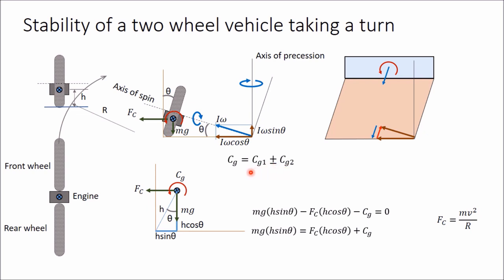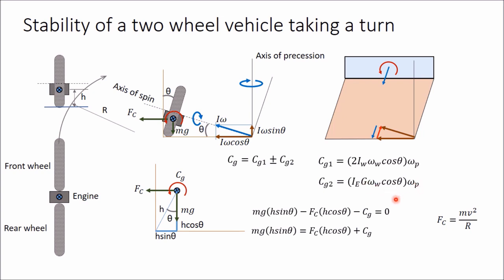Cg1 is calculated as: Cg1 = 2·Iw·ωw·cosθ·ωp, where there are two wheels, Iw is moment of inertia of each wheel, ωw is angular velocity of the wheel, and ωp is angular velocity of precession — noting that we use I·ω·cosθ as explained. Cg2 is calculated as: Cg2 = Ie·G·ωw·cosθ·ωp, where Ie is moment of inertia of engine rotating parts, G is gear ratio, and ωp is again the angular velocity of precession. The angular velocity of the wheel is ωw = V/Rw (vehicle velocity divided by wheel radius), and ωp = V/R (vehicle velocity divided by radius of curvature).